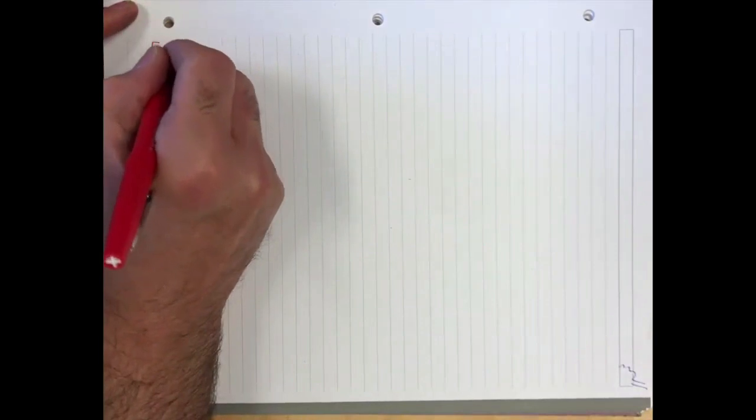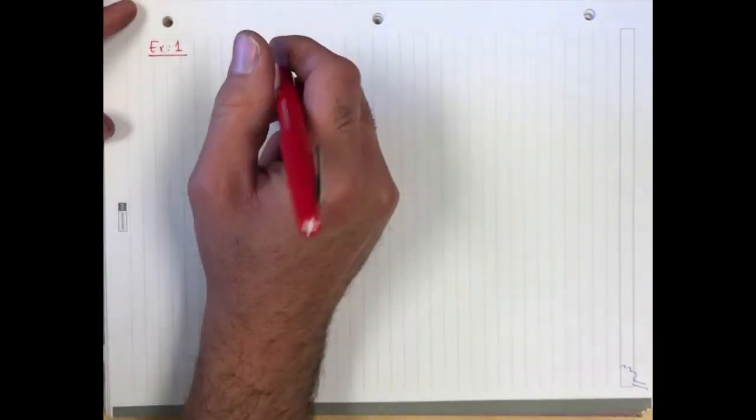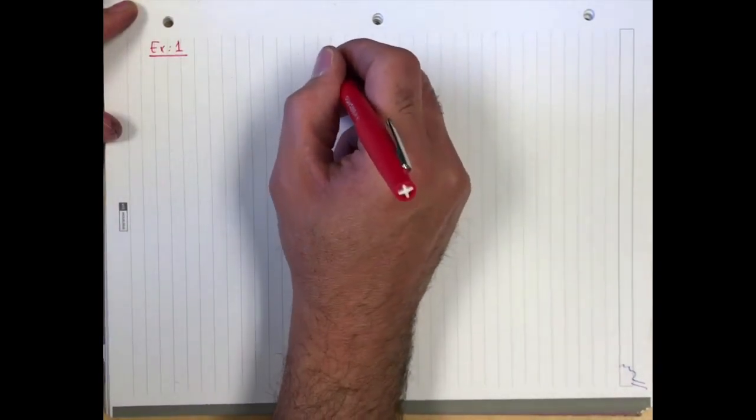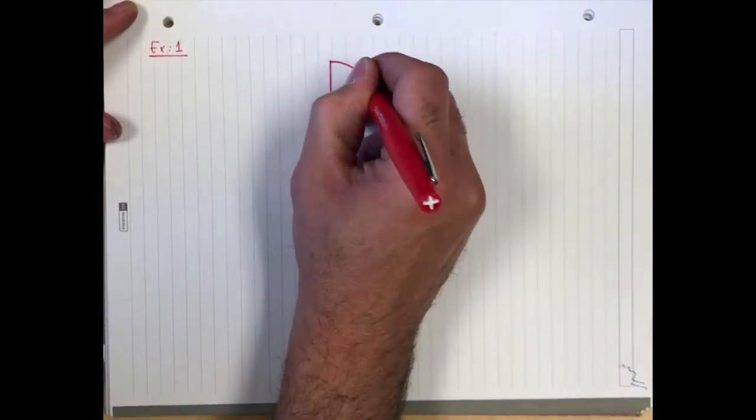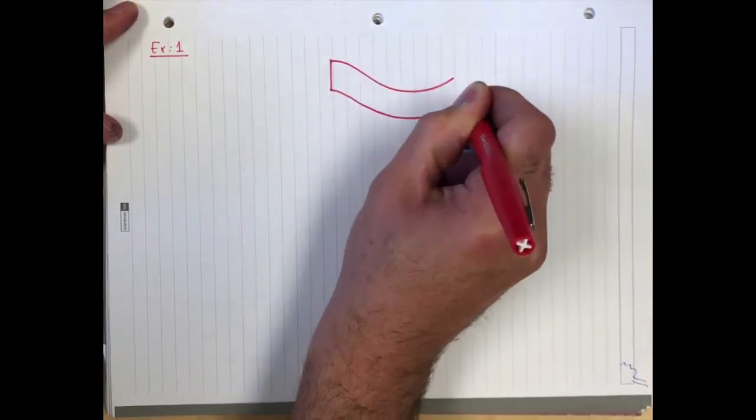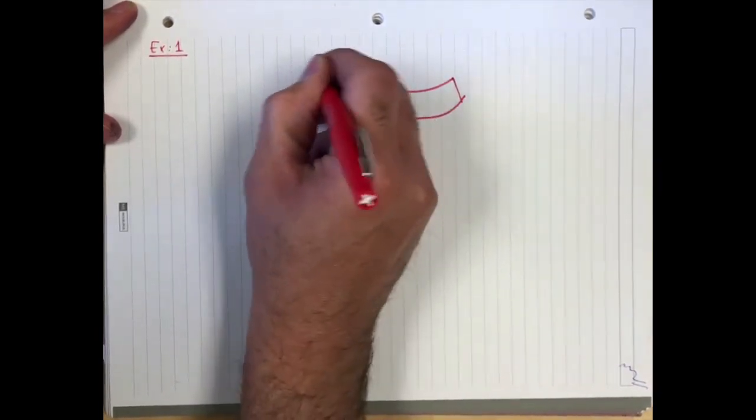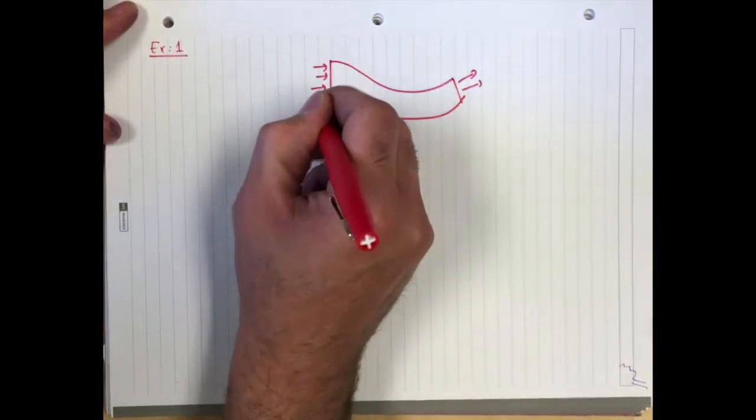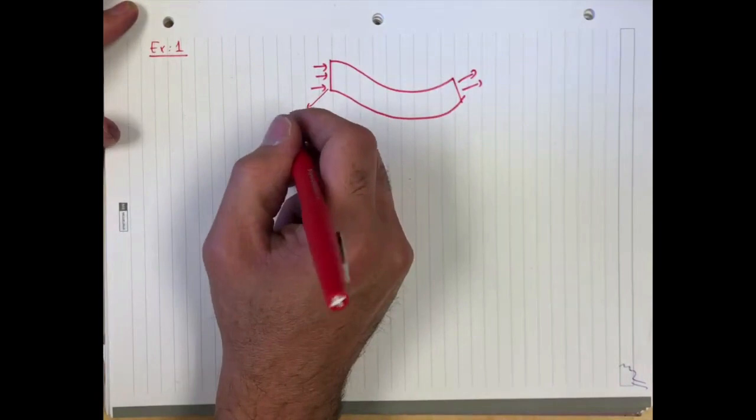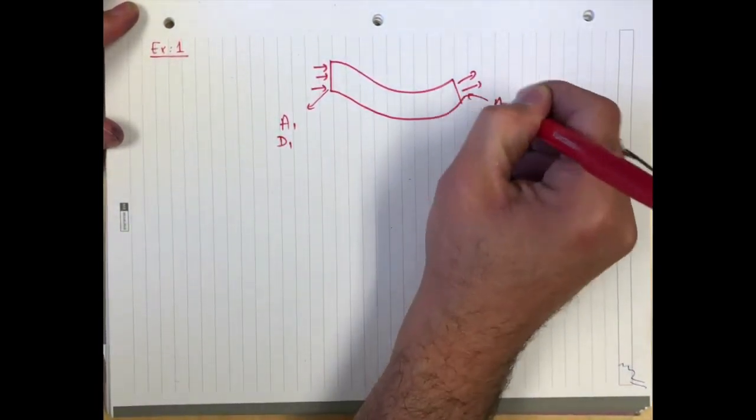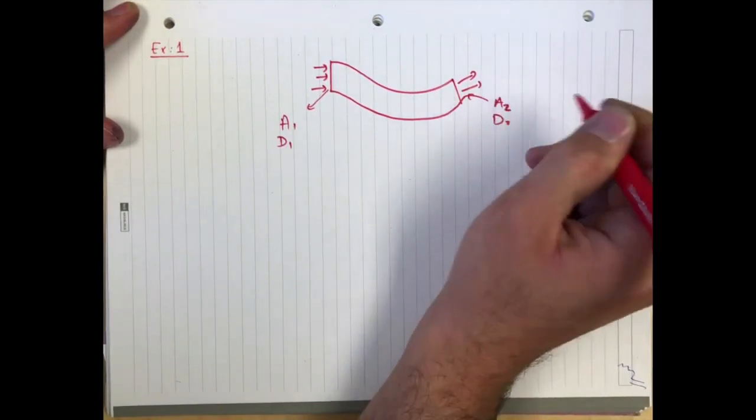Example one. You're given this flow in a fire fighter's hose. Then there's flow coming in, flow coming out. This has an area A1, diameter D1. This has area A2, diameter D2.